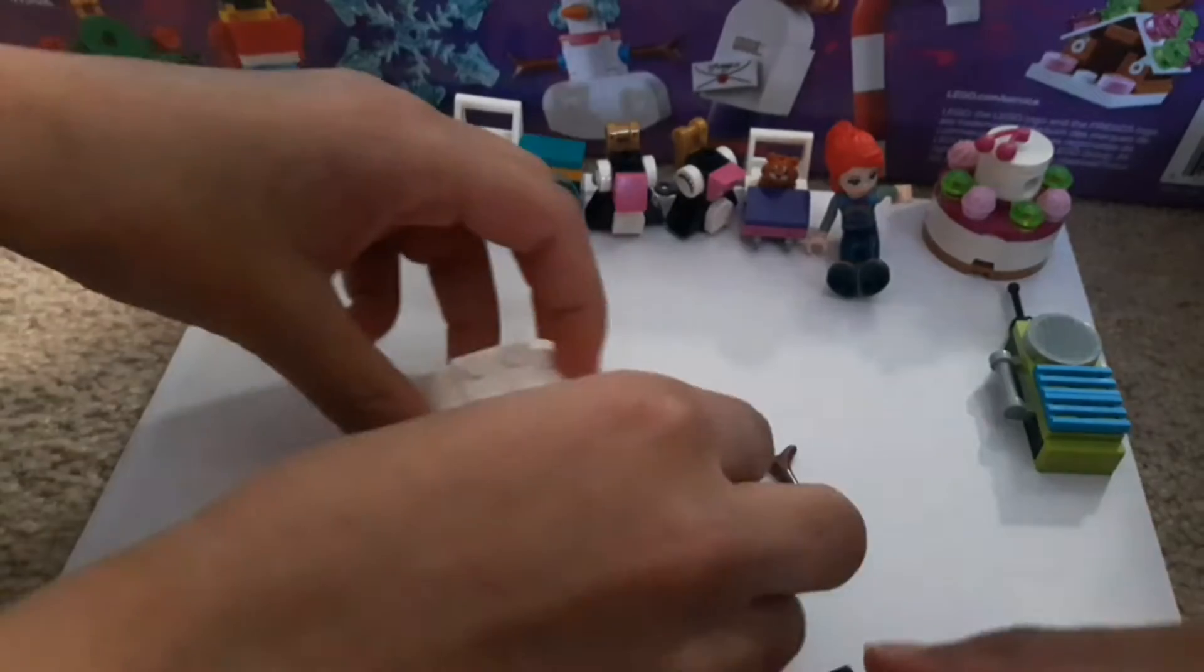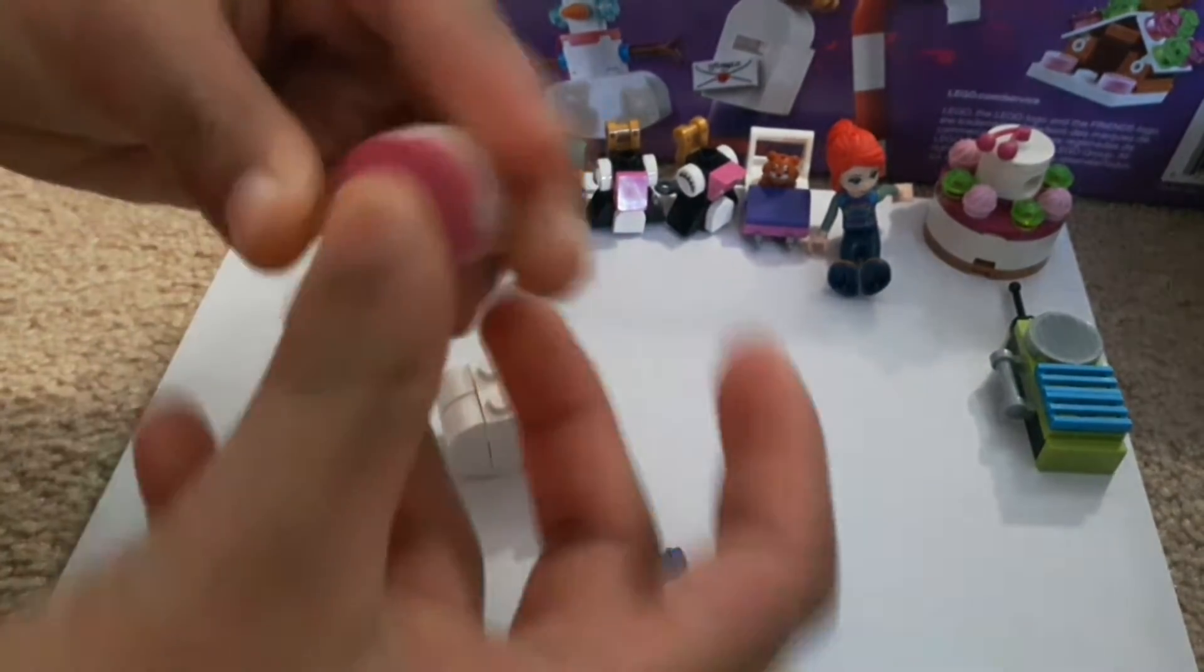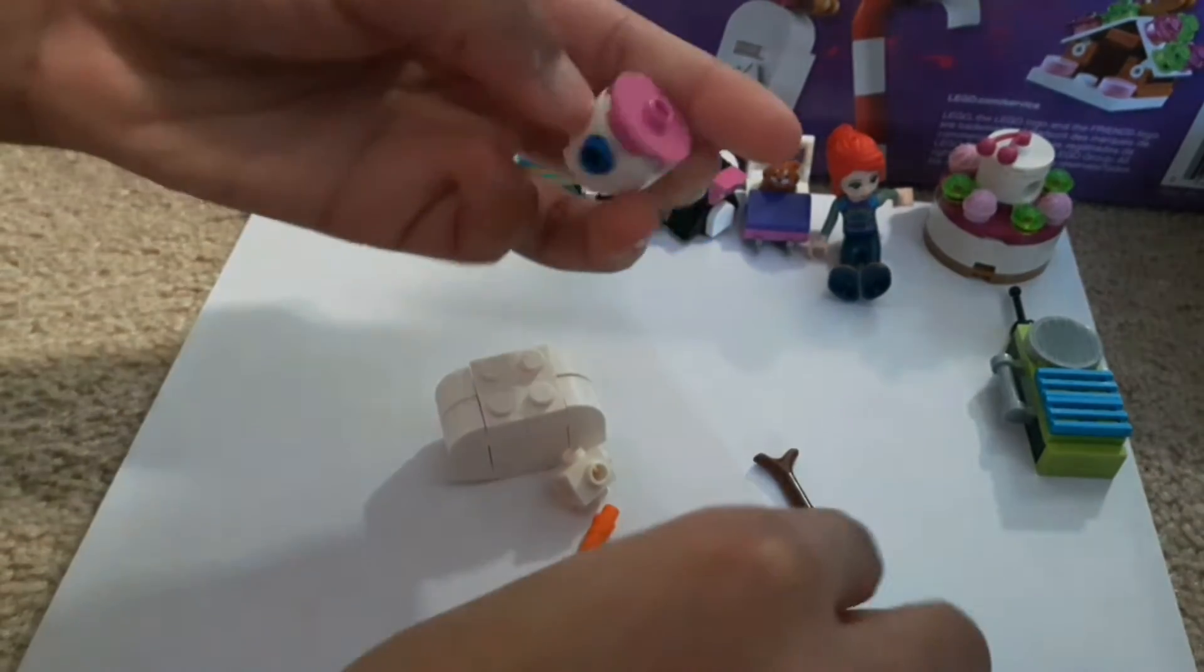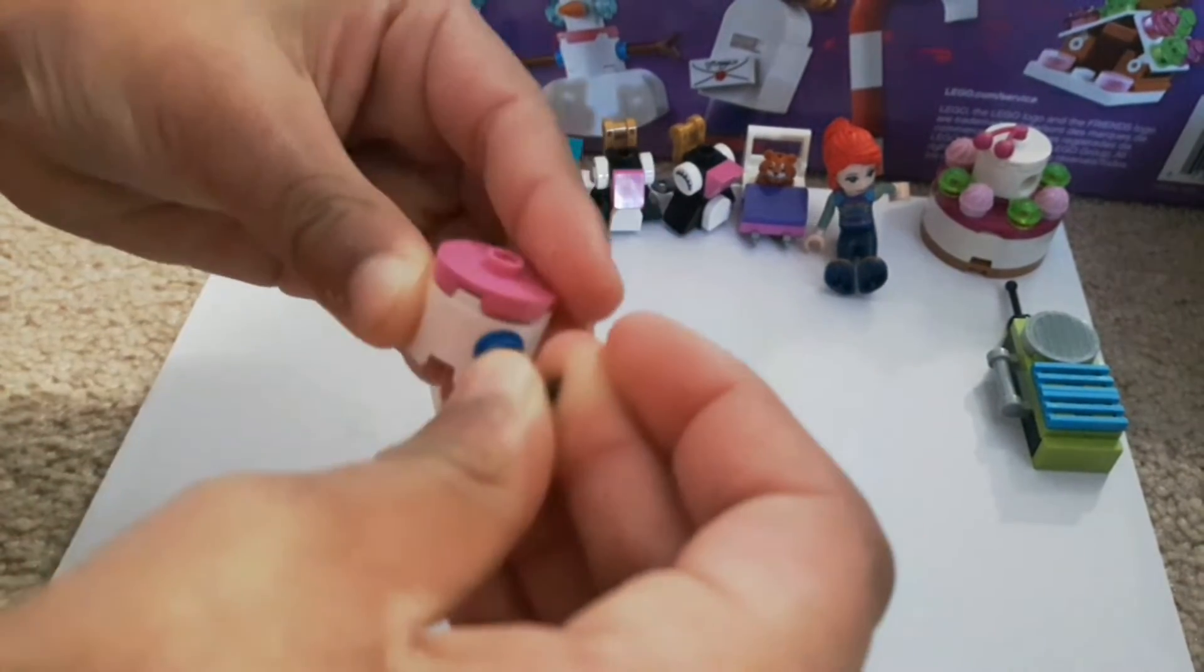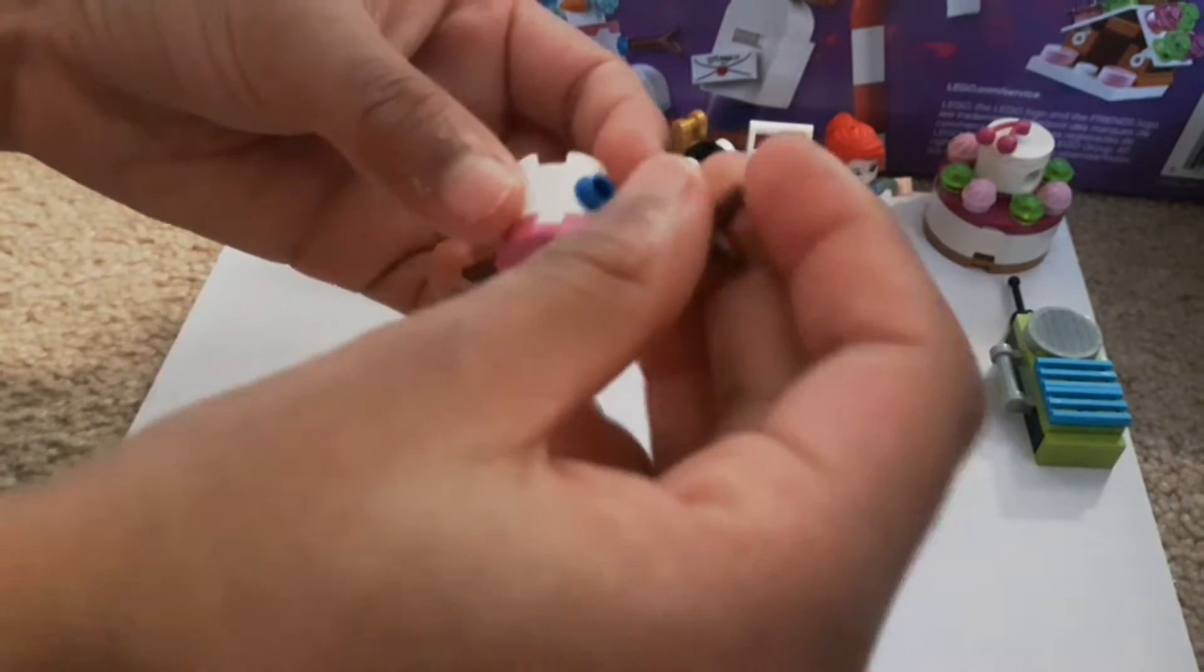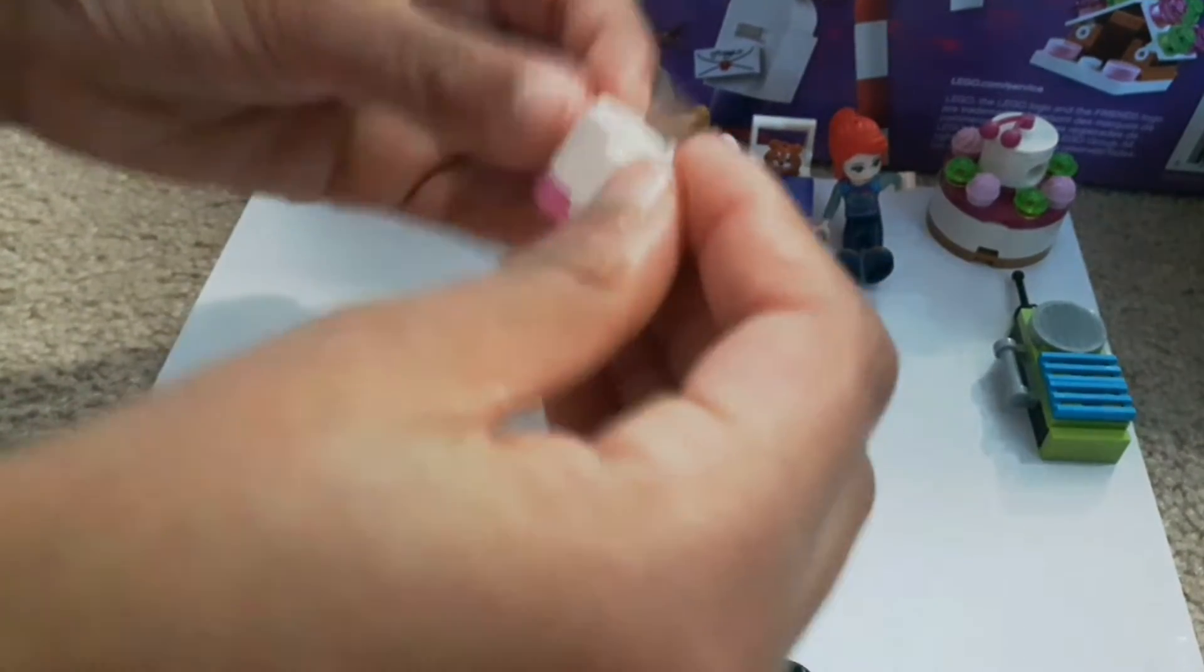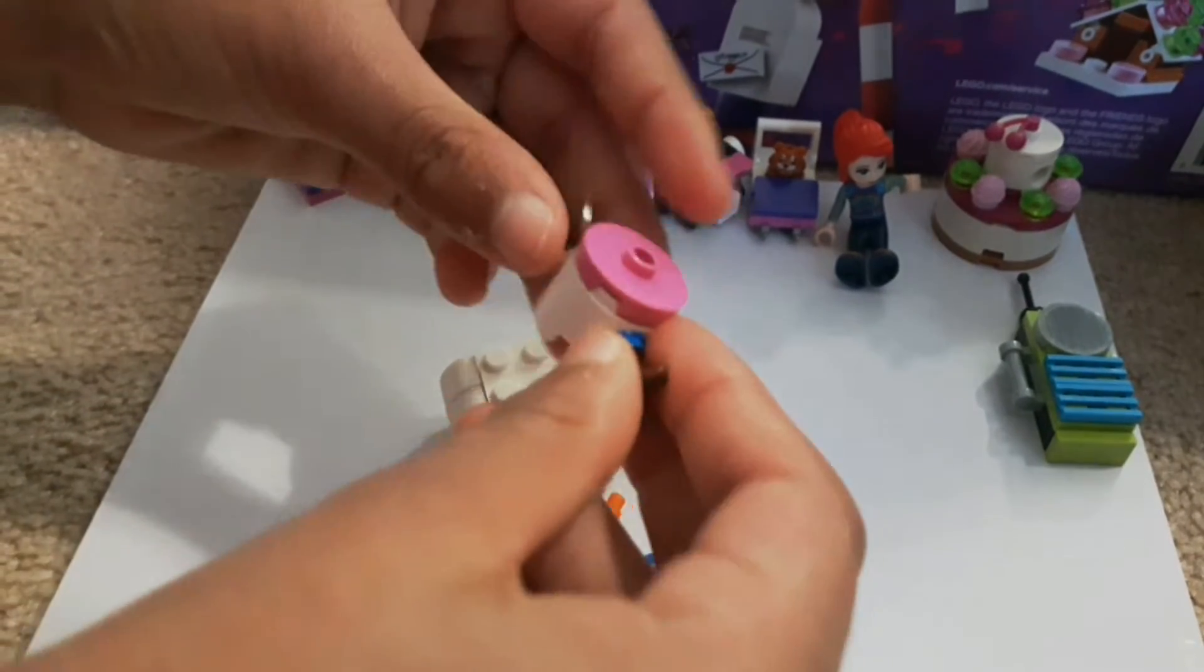And maybe you can just tie it around her arm or something. You can put a hook out of her. It's too small. So, this one has a lot of pieces.